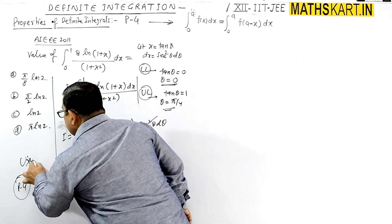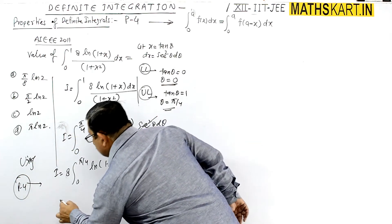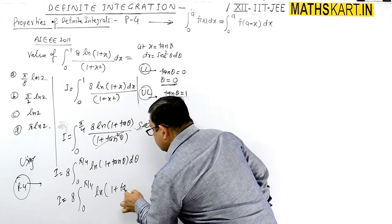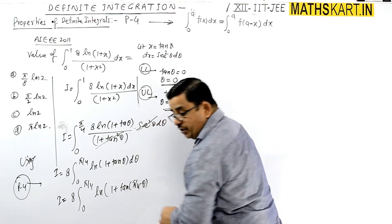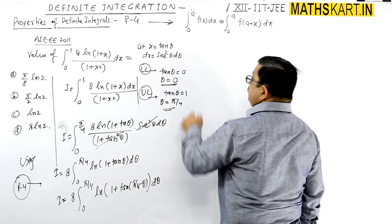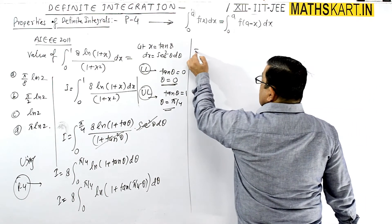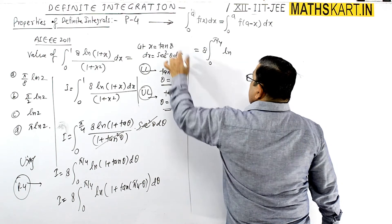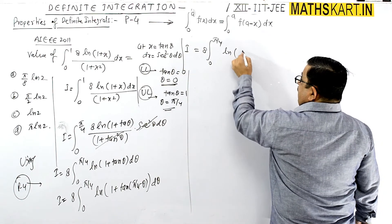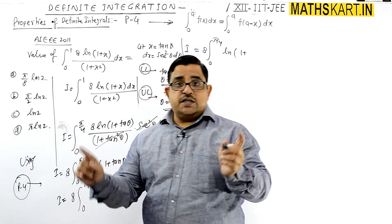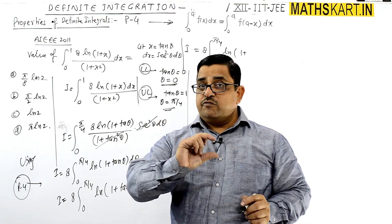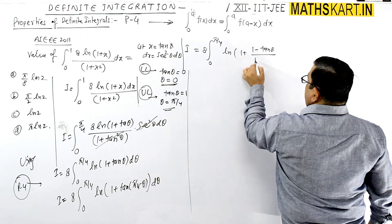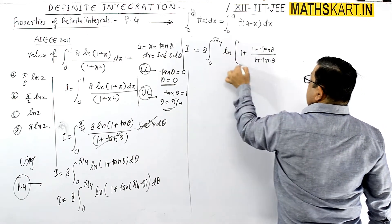Using Property 4, we substitute theta with (pi/4 minus theta). The expression becomes 8 times the integral from 0 to pi by 4 of ln(1 plus tan(pi/4 minus theta)) d theta. Applying the tan(A minus B) formula: tan(pi/4 minus theta) equals (1 minus tan theta) divided by (1 plus tan theta). So inside the log we have 1 plus (1 minus tan theta) divided by (1 plus tan theta).